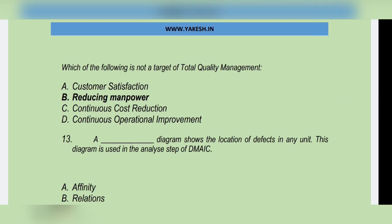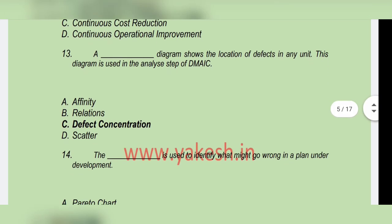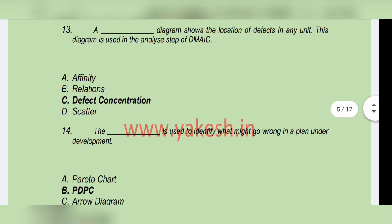Which of the following is not a target of Total Quality Management? Option B: Reducing manpower. Next question: A defect concentration diagram shows the location of defects in any unit. This diagram is used in the Analyze step of DMAIC. Option C: Defect concentration diagram is the correct answer.